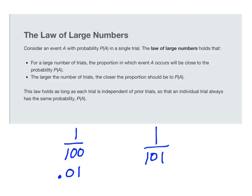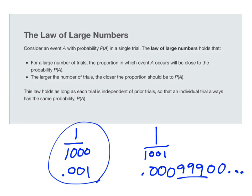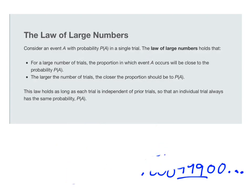If we look at 1,000 trials versus 1,001: one out of 1,000 is 0.001, and one out of 1,001 is about 0.0009999. That last one had three nines, which means it's even closer than the one-out-of-101 comparison was to one-out-of-100. In general, if the probability doesn't change a whole lot when you make that comparison, then you probably have a large enough number of trials.